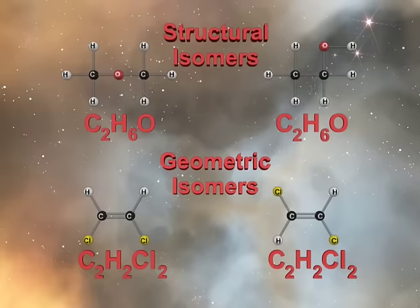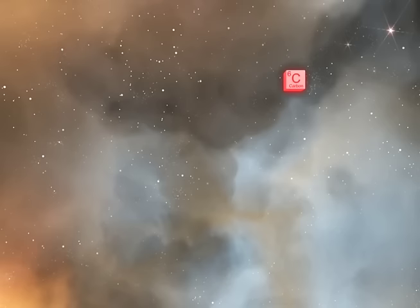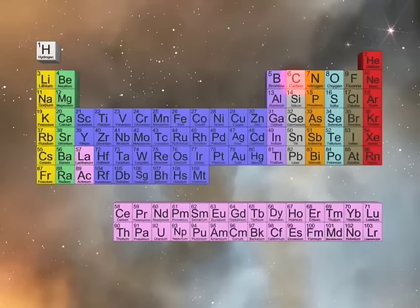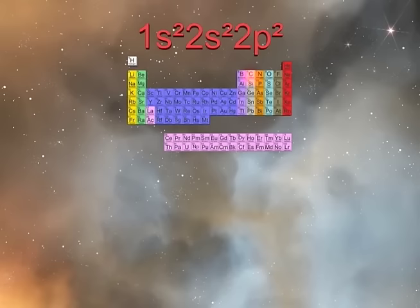To introduce the concepts of hybridization we will first focus all of our examples on the carbon atom. The basic principles discussed for the carbon atom can also be applied to other elements which are explored in later sections. A carbon atom has six electrons in the following configuration: 1s2, 2s2, 2p2.